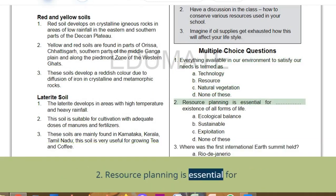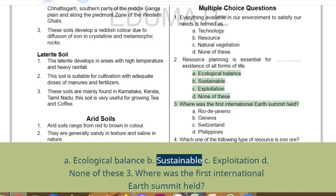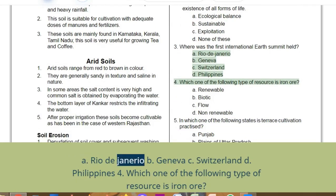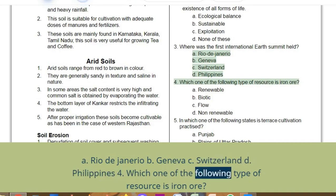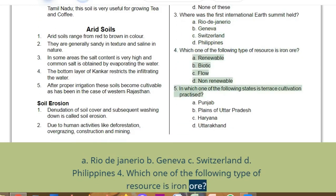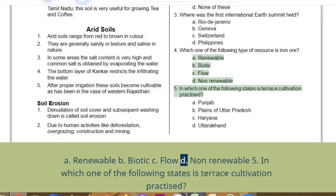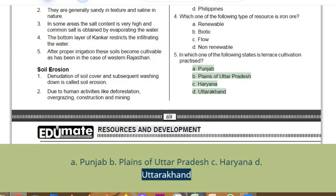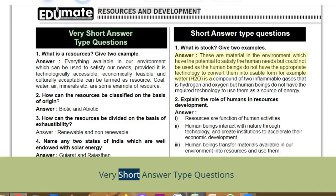Resource planning is essential for... Where was the first International Earth Summit held? A. Rio de Janeiro, B. Geneva, C. Switzerland, D. Philippines. In which state is terrace cultivation practised? A. Punjab, B. Plains of Uttar Pradesh, C. Haryana, D. Uttarakhand.